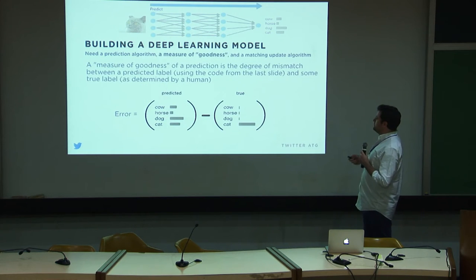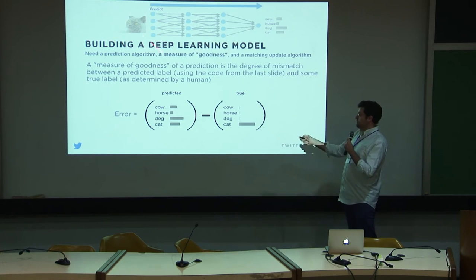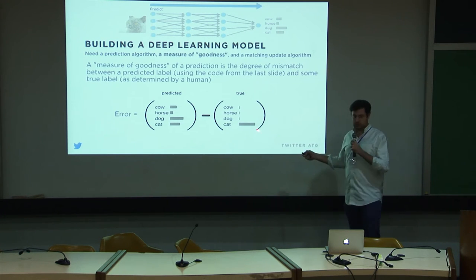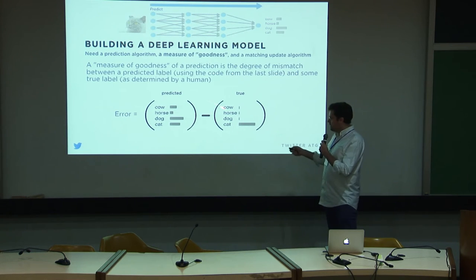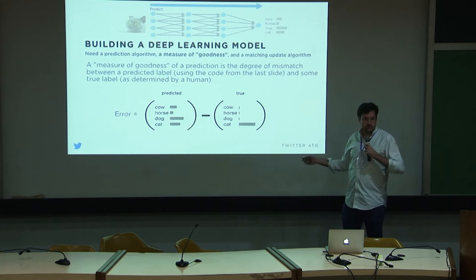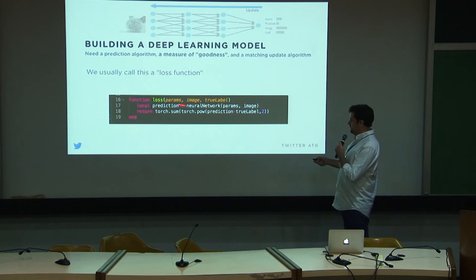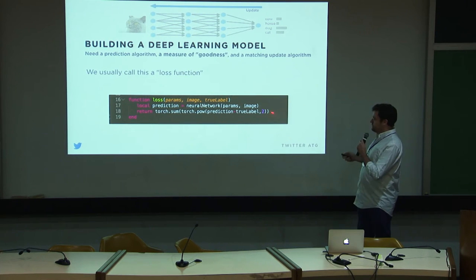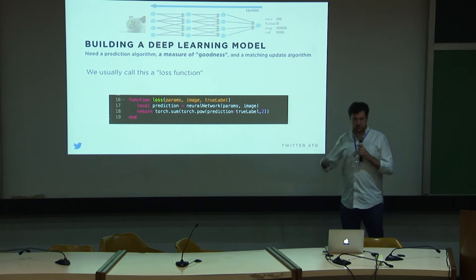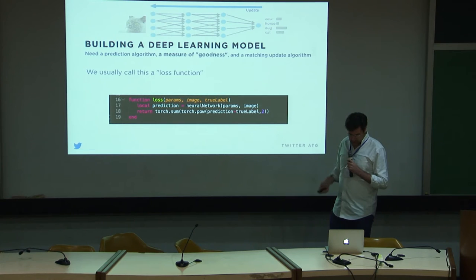Then I need a measure of goodness — I need to predict how mismatched my prediction is from the true value. If the input is a cat, the cat has probability one and everything else is probability zero. I could subtract the two probability vectors and get the squared error. We usually call this a loss function — there are lots of different ways to specify it, but this is a simple one.